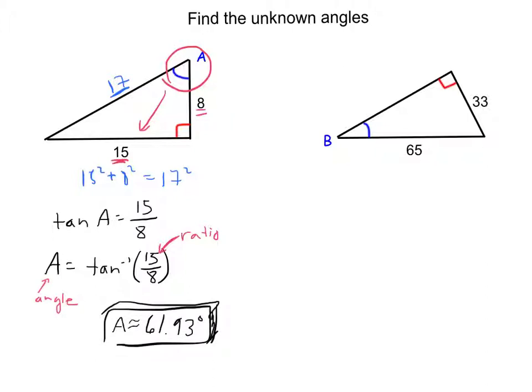We're on this side a little bit faster. I want angle B, it opens up to the 33, so this is going to be opposite, and the 90 opens to the 65, so that's the hypotenuse. Opposite and hypotenuse, this is a sine ratio.